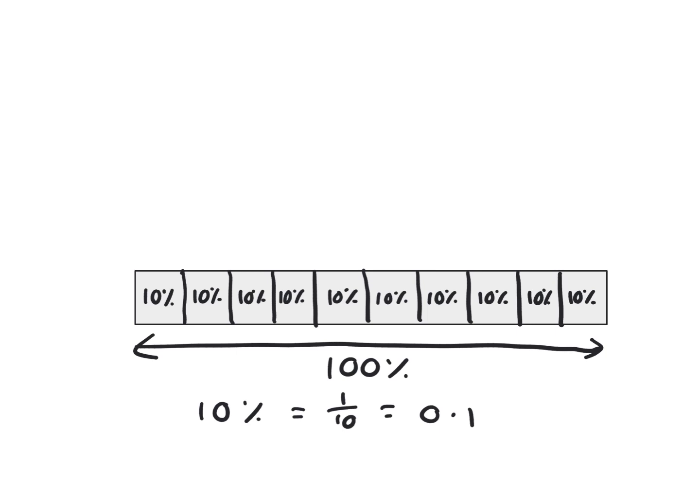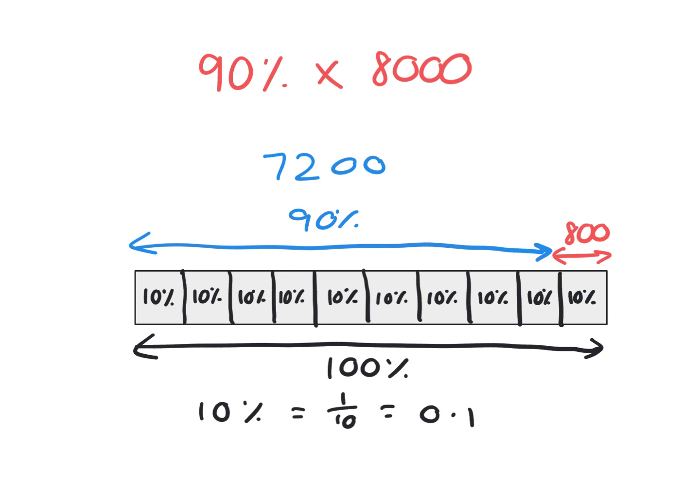And one more idea to go through: 90% of 8,000. Sometimes we can work out the 10%, that's fine, which would be 800, and have nine of those. Or we can work out the 10%, which would be 800, and then subtract that from the 100%. And that would leave us with 90%. So 8,000 minus the 800 gives us 7,200. We can sometimes work backwards as well.